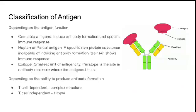Classification of antigen based on function: antigens are classified as complete antigen or partial antigen. A complete antigen makes our body produce antibodies and also stimulates the immune response. A partial antigen does not make our body produce antibodies but will show a mild immune response without inducing any antibody formation.